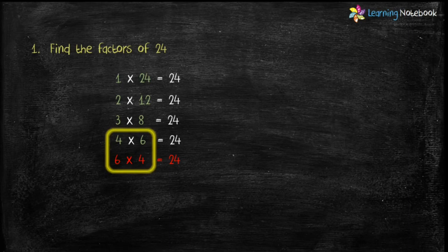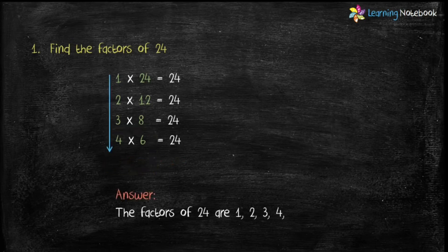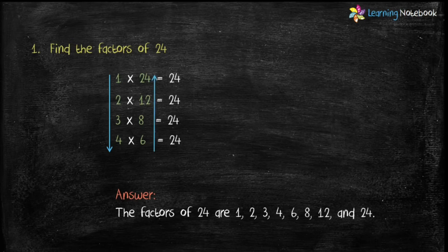We have to find factors until we start getting the same factors. Like 4 × 6 equals 6 × 4, so it means we have found all the factors and we will stop at 4 × 6. Therefore factors of 24 are — writing from top to bottom: 1, 2, 3, 4, and from bottom to top: 6, 8, 12, and 24.